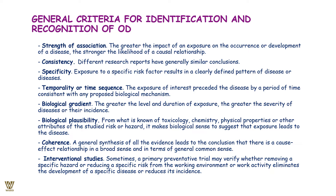We start identifying occupational diseases based on certain criteria. Number one is strength of association: the greater the impact of an exposure on the occurrence or development of disease, the stronger the likelihood of a causal relationship. Second is consistency: different research will have more or less similar conclusions. Third is specificity: exposure to a specific risk factor results in a clearly defined pattern.